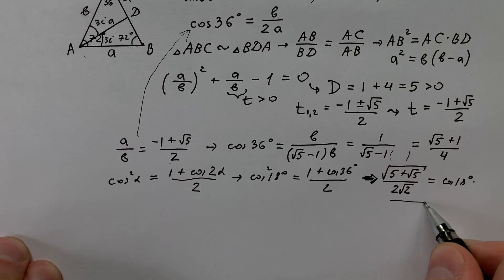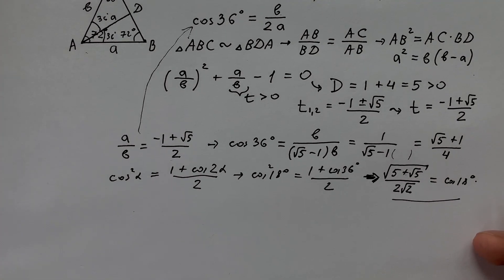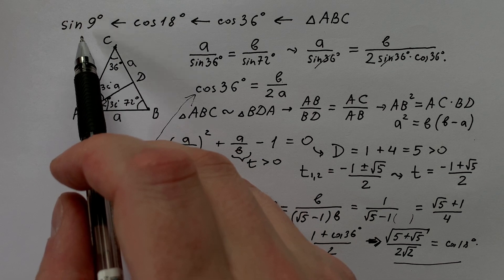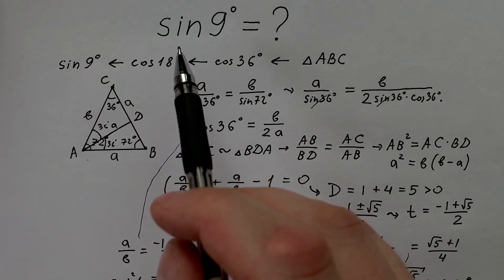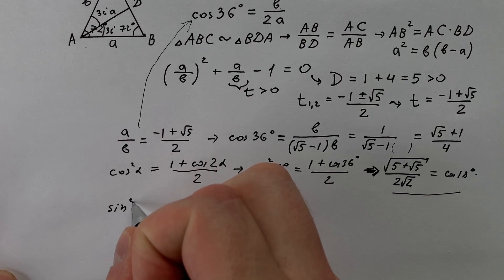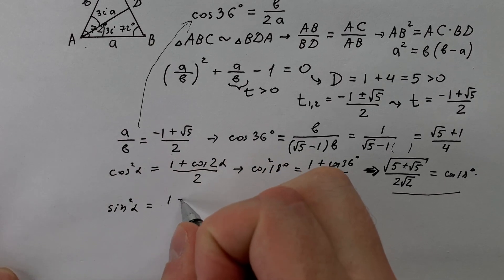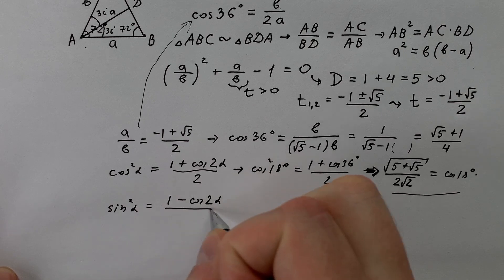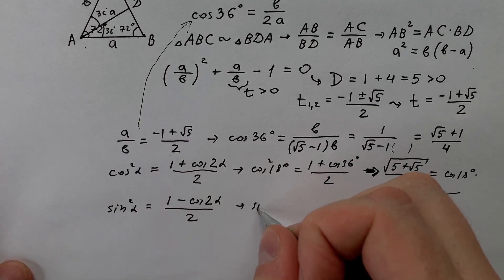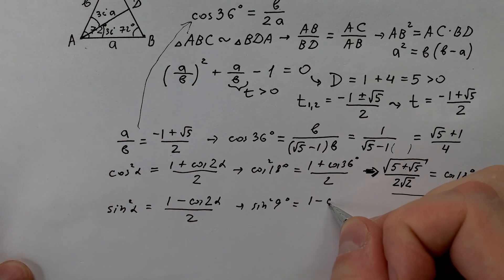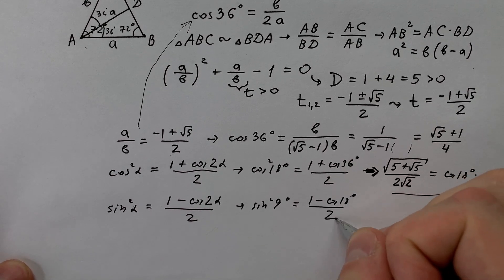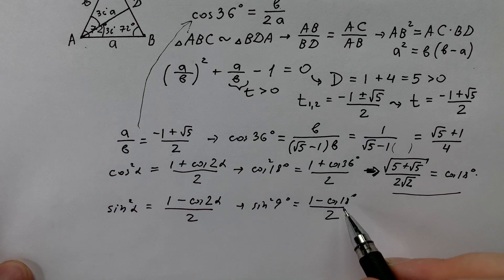Now we have cosine 18 degrees. But from cosine 18 degrees we have to find sine 9 degrees. It is our main problem. Using another formula, sine squared alpha equals to 1 minus cosine double alpha divided by 2. We get that sine squared 9 degrees equals to 1 minus cosine 18 degrees divided by 2. And putting this cosine into this formula.